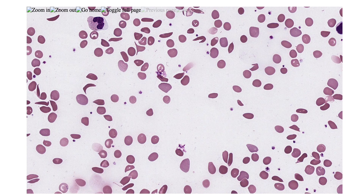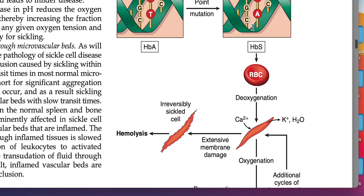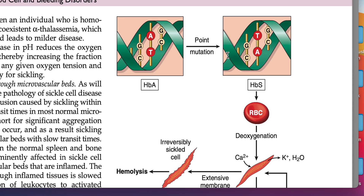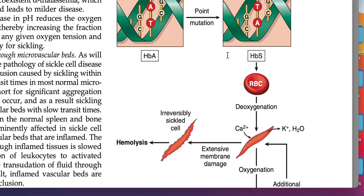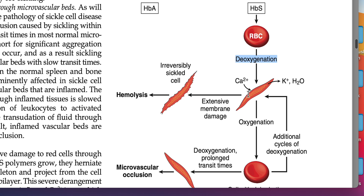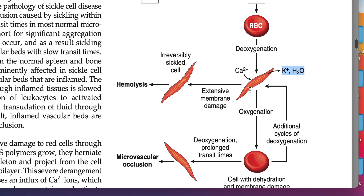Now let's look at the pathogenesis in just under a minute. Going with Robbins — due to the point mutation, glutamic acid becomes valine, and the hemoglobin becomes less soluble. When hemoglobin is less soluble, it pokes the membrane — like a sugar solution where undissolved sugar is rough and pokes the membrane. This happens primarily in a deoxygenated state. Because of this membrane poking, calcium enters, which activates potassium and water to exit, causing dehydration. More dehydration accentuates the solubility problem further, making the RBC extremely rigid and causing it to sickle.